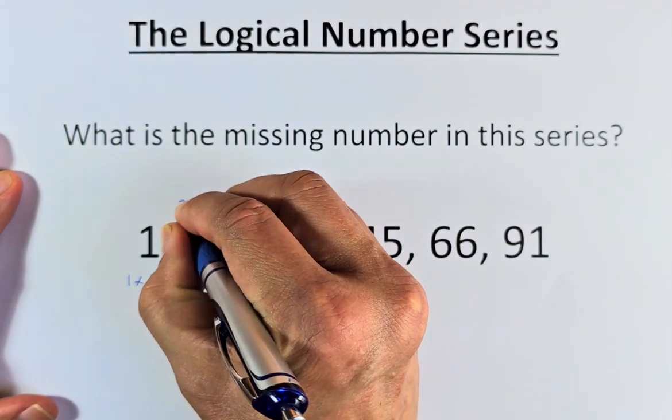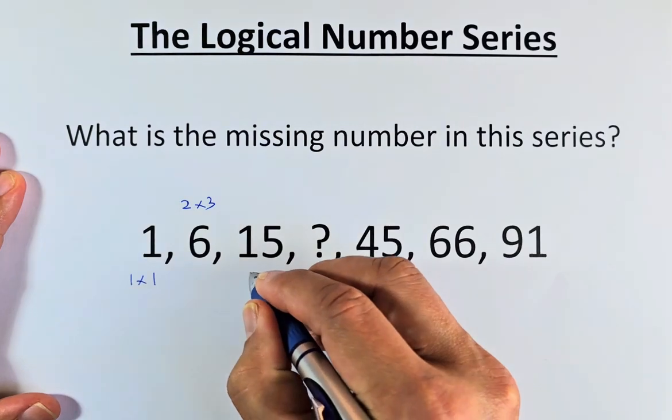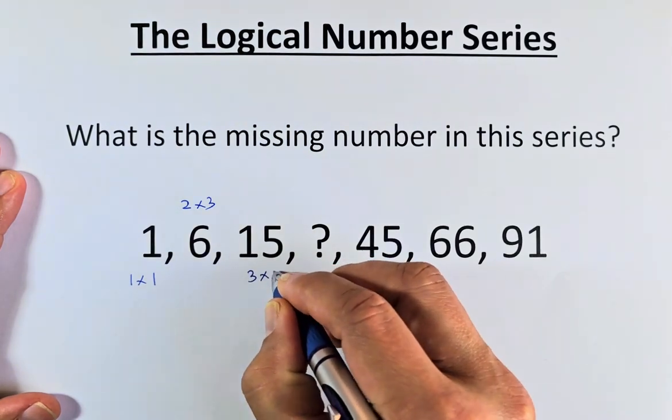6 is made up of 2 times 3. And 15 is 3 multiplied by 5.